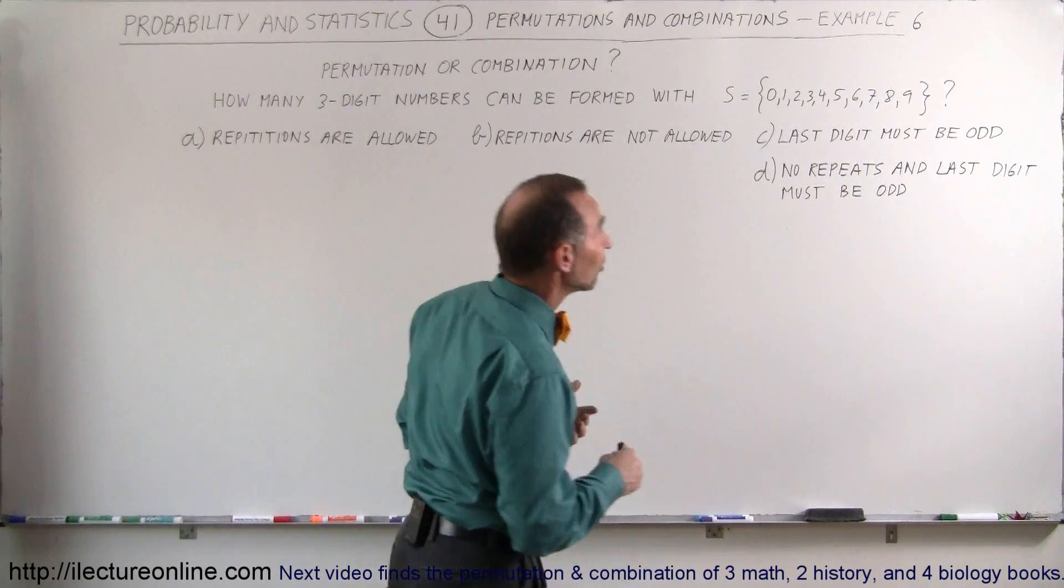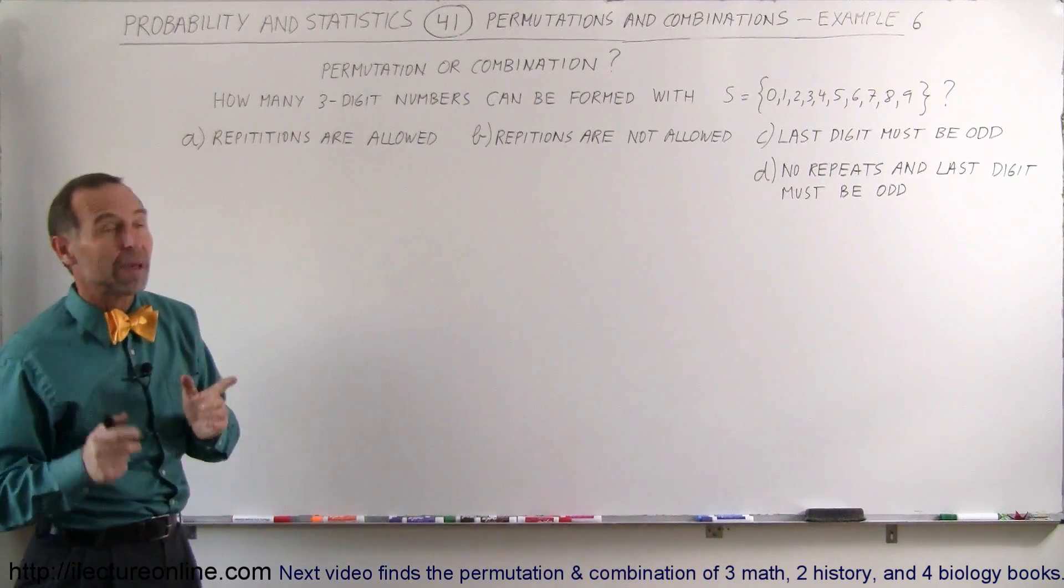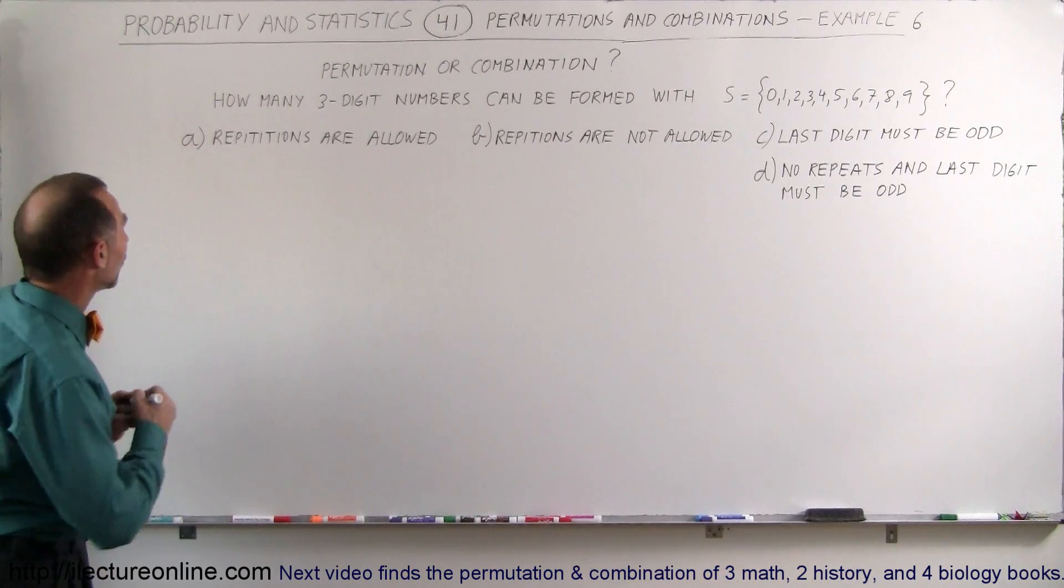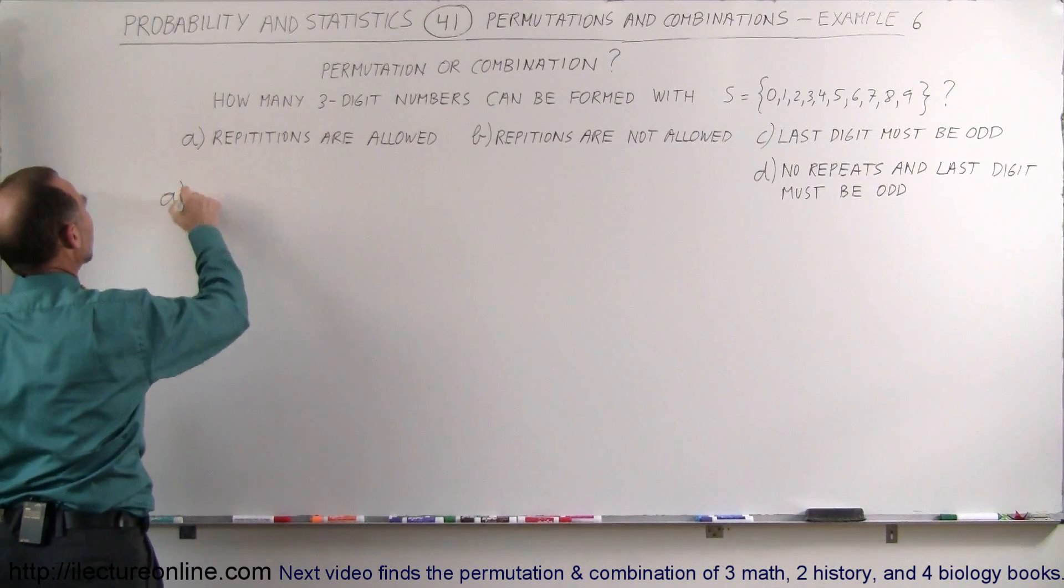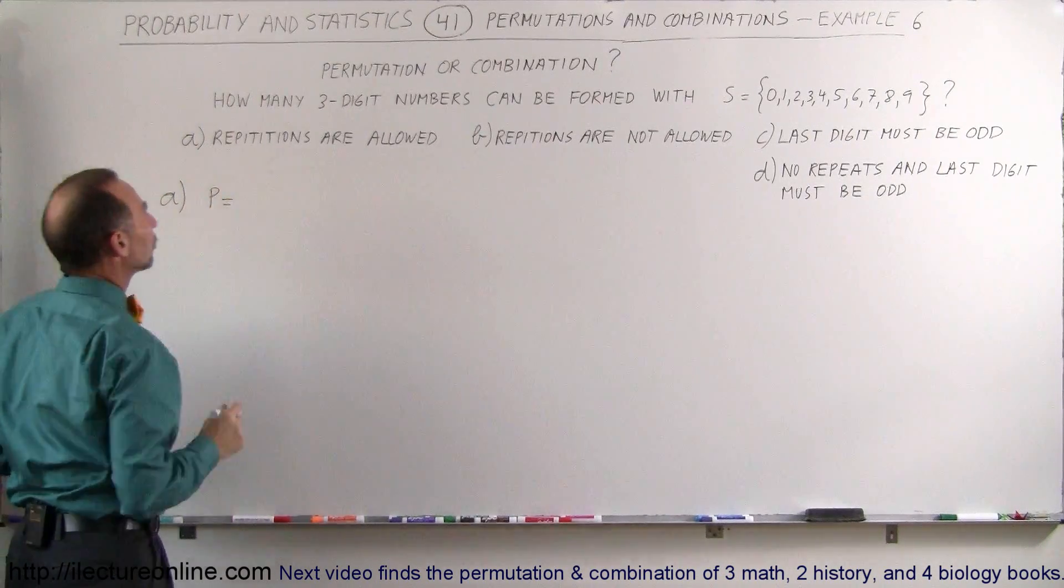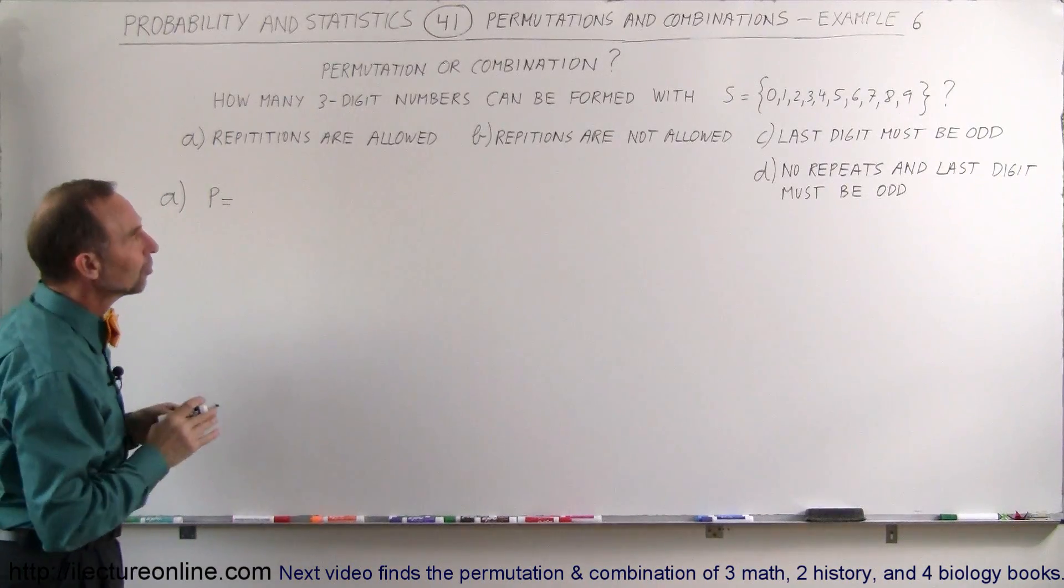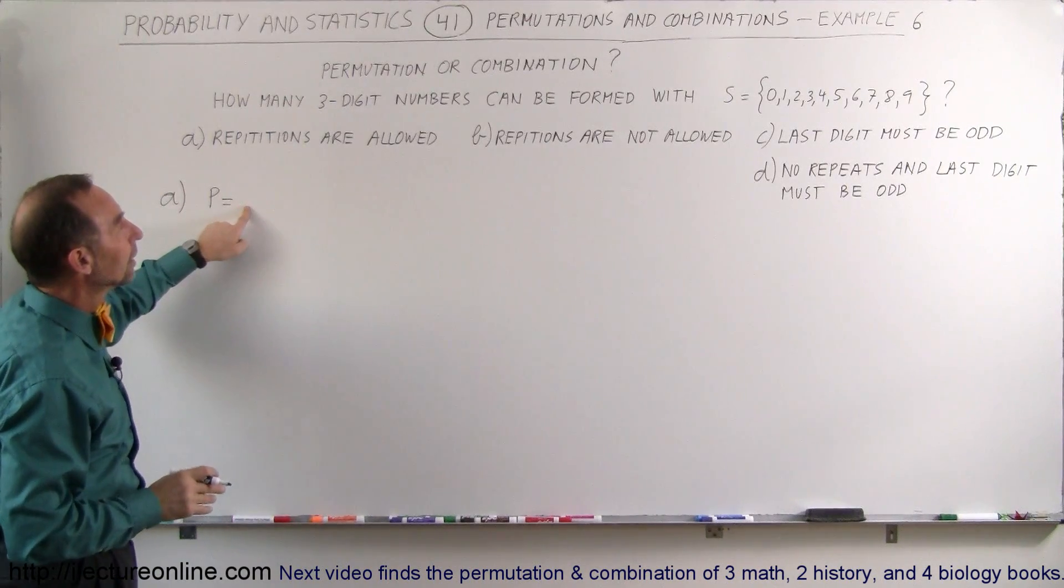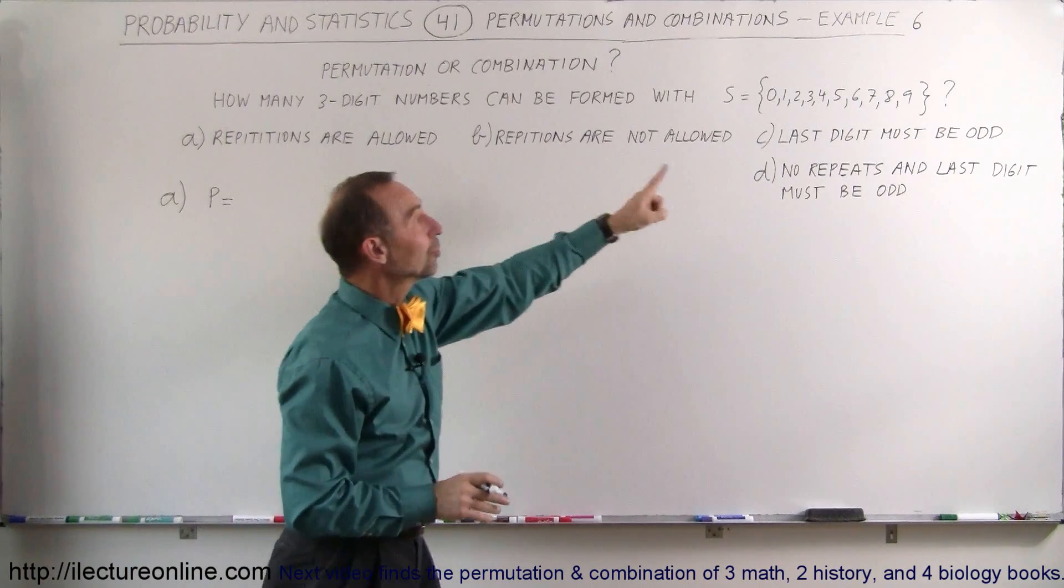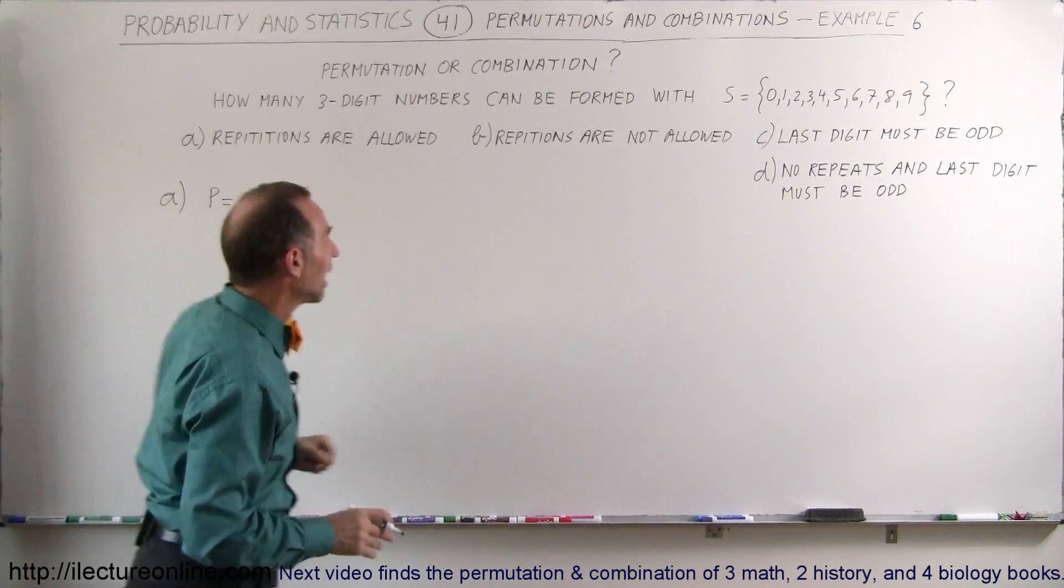So what are the number of permutations in this case? Because order does matter so we are looking for permutations. For part A, since repetitions are allowed, the number of permutations is going to be: let's see, how many options do you have for the first digit? Well the first digit could be anything from 1 to 9 but not 0, that means there's 9 possibilities.